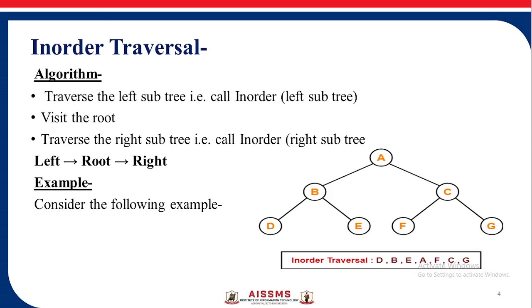The algorithm for in-order traversal is: traverse the left subtree, call in-order recursively on the left subtree, then visit the root, then traverse the right subtree, call in-order recursively on the right subtree. That is, we follow the order as left, then root, then right. Consider the example here.